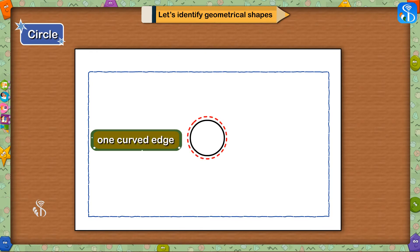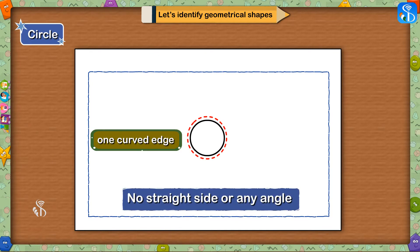A circle has only one curved edge as you can see here. It has got no straight side or any angle.